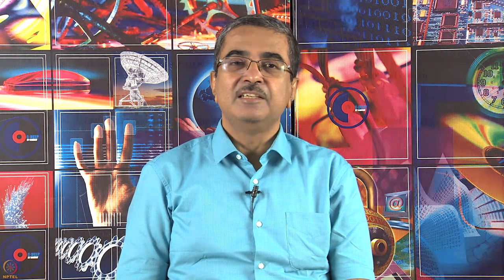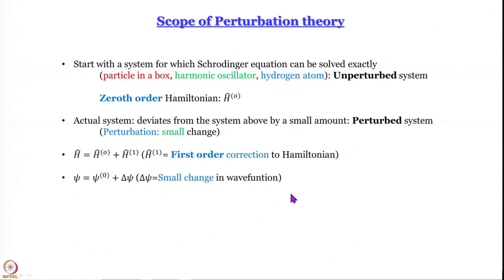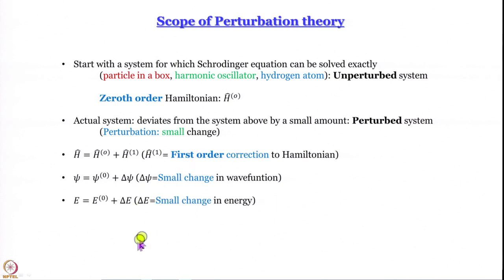Perturbation is a small, small change — this is very important. We write the Hamiltonian of the perturbed system as Ĥ⁽⁰⁾ plus Ĥ⁽¹⁾, where Ĥ⁽¹⁾ is the first-order correction to the Hamiltonian. The wave function ψ of the perturbed system is written as ψ⁽⁰⁾ plus δψ, where δψ is a small change in wave function, and the energy E is E⁽⁰⁾ plus δE, where δE is a small change in energy.